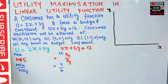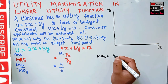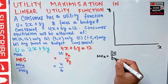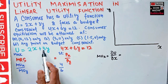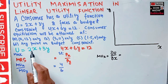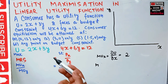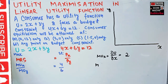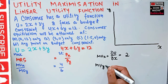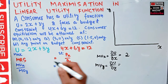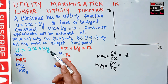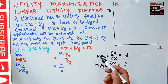Marginal utility of good x is the partial derivative of the utility function with respect to good x. Taking the partial derivative of U = 2x + 3y with respect to x, the derivative of x is 1, so we are left with 2. Similarly, marginal utility of good y is the partial derivative with respect to y — the derivative of y is 1, so we are left with 3.